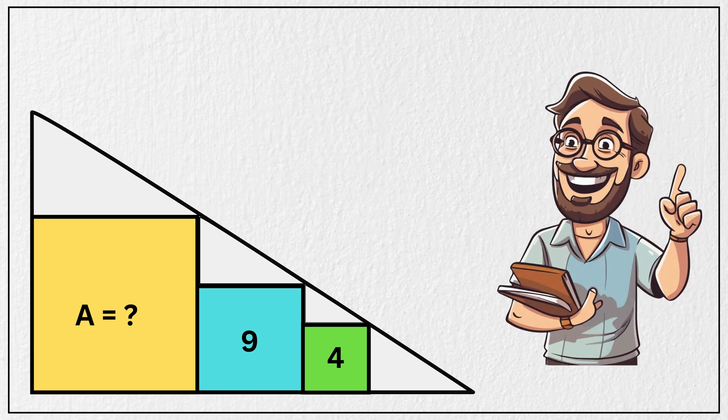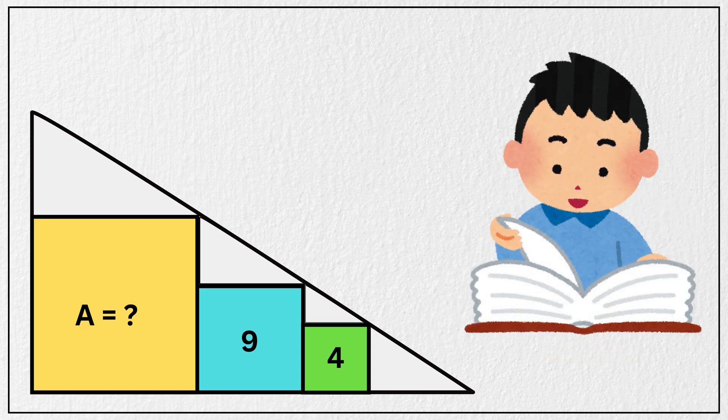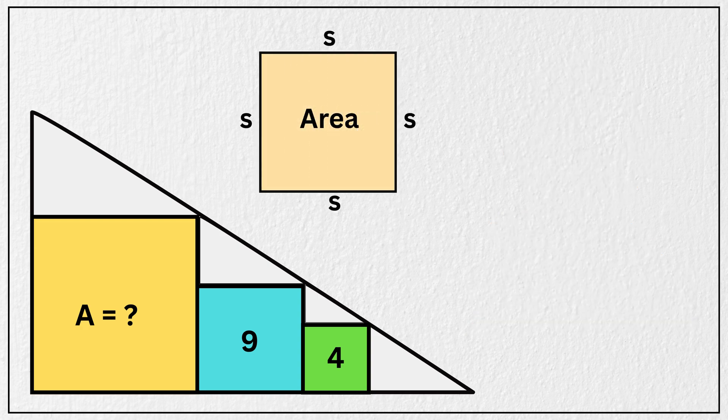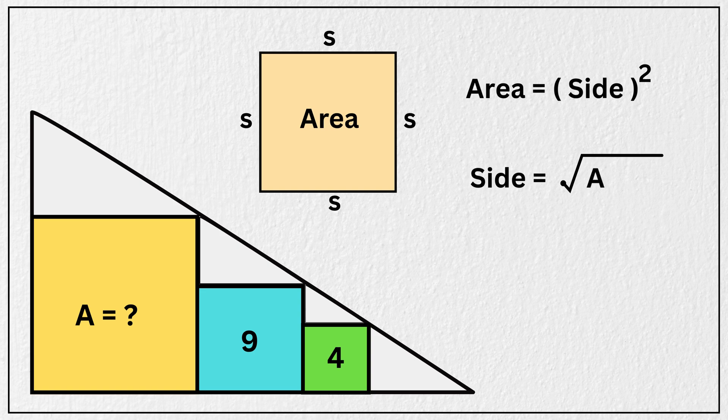Alright, let's walk through the solution together. But before we start, let's quickly recap the properties of a square related to its area. We know that the area of any square is given by the square of its side, and the length of each side can be found by taking the square root of the area.